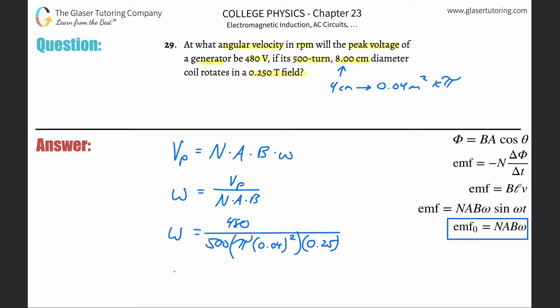Alright, so there we go. And the angular velocity now is going to be, remember, radians per second. So it's going to be 480 divided by parentheses 500 times pi times 0.04 squared times 0.25. And that's 764 radians per second.